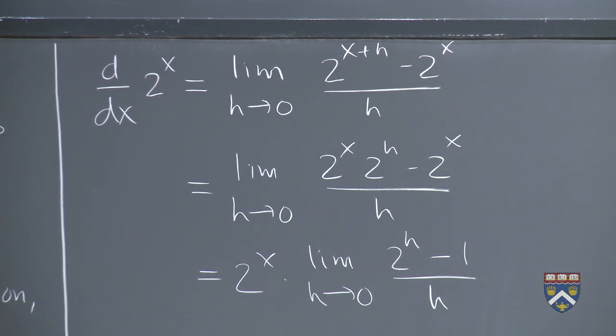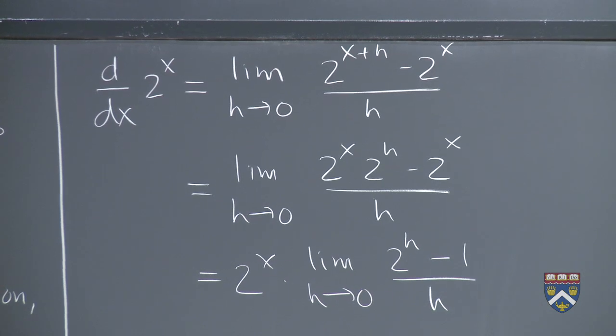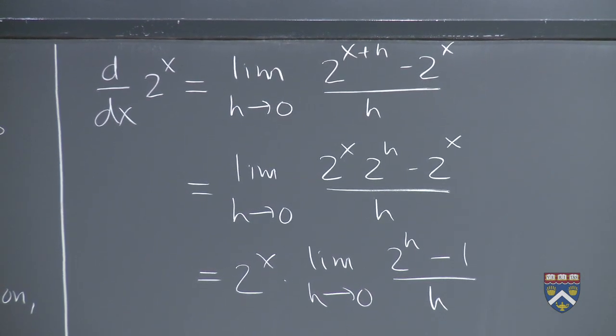Now let's look at this limit. As h goes to 0, 2 to the h goes to 1. So the top of the fraction is going to 1, and so is the bottom of the fraction. And that's another one of these indeterminate forms. In fact, every time we compute a derivative, if you've been paying attention to this, the top and the bottom are both going to 0.